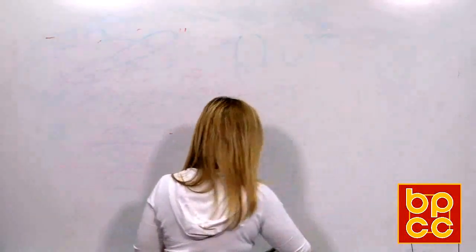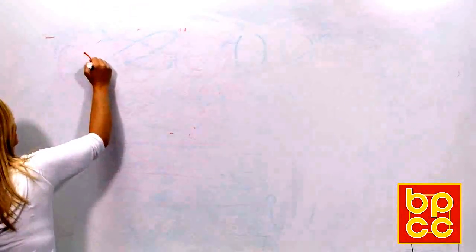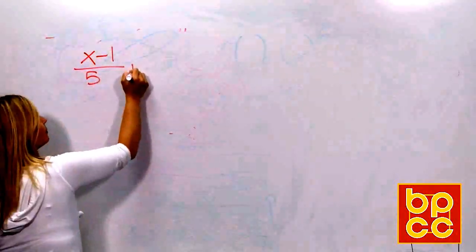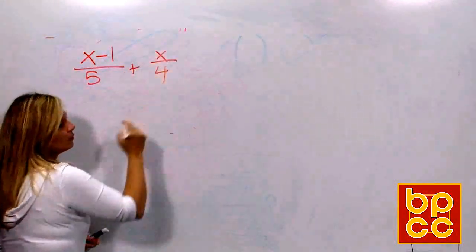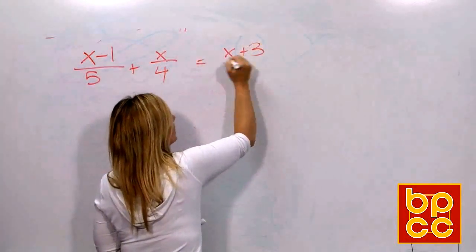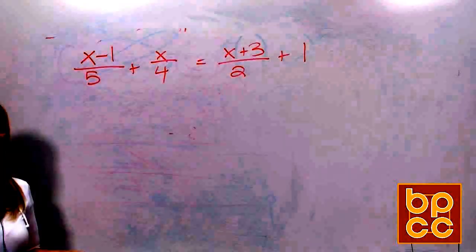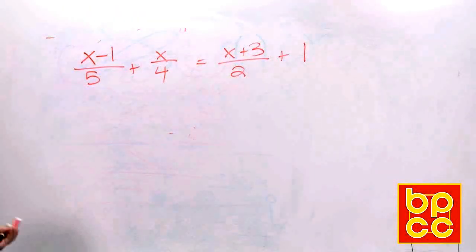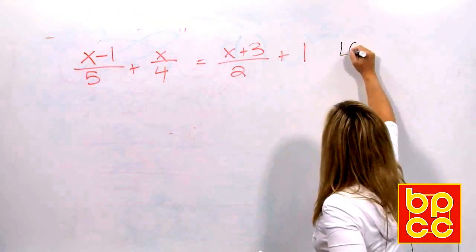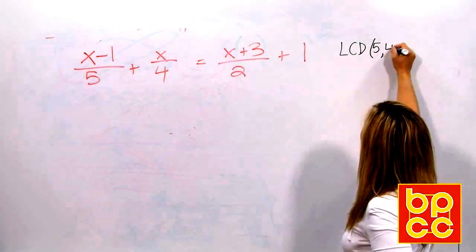So again, all we're learning really here is that we have a new vocabulary word. If an equation contains fractions, it is called what? Rational. Very good. So here's our second example in this module. Alright, if you look, our goal is to get who by itself? X. Can we get X by itself? Not right now, it's stuck in fractions. So to get rid of fractions, what do we need? An LCD. We have in the denominator a 5, a 4, and a 2. What would be the LCD? What do they have in common? Think of your time tables. Think of what number these all divide into. Very good, it's 20.